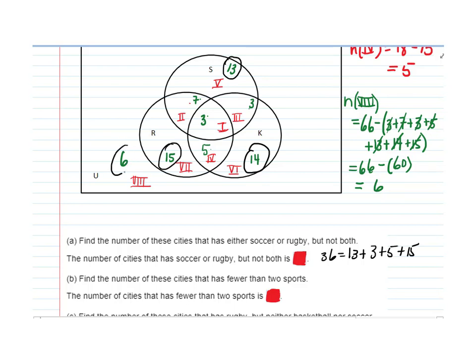And then there's also cities that have none, which is region 8 has 6. So we need to add up 13, 14, 15, and 6. Which is going to come out to be 48 cities that have both.